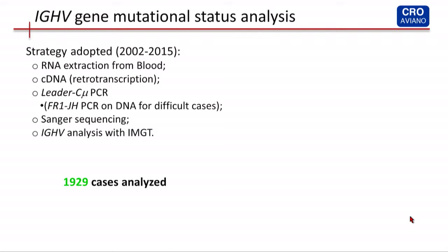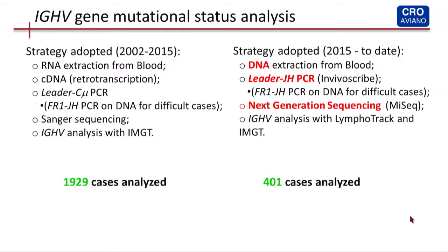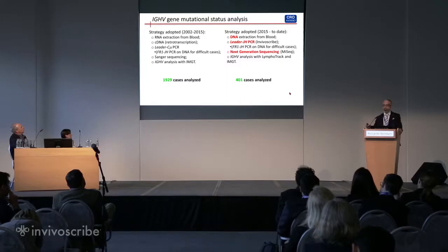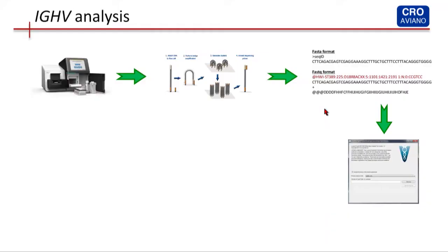Since my institute purchased a MiSeq instrument in 2014, we decided in my lab to move all our diagnostics related to Sanger sequencing to next-generation sequencing. Among them, we moved the IGHV mutational status. From the middle of 2015 through the end of February, we analyzed almost 400 cases of CLL at diagnosis using the Lymphotrack assay, using DNA starting material from blood, the leader-JH PCR, and for difficult cases the FR1 strategy. We ran the sequences on the MiSeq and analyzed them using the Lymphotrack software or the IMGT database.